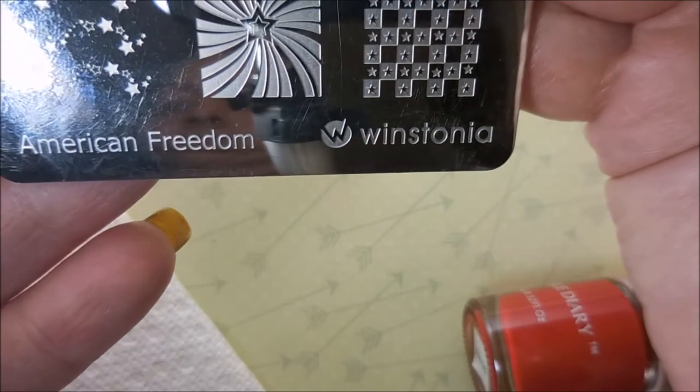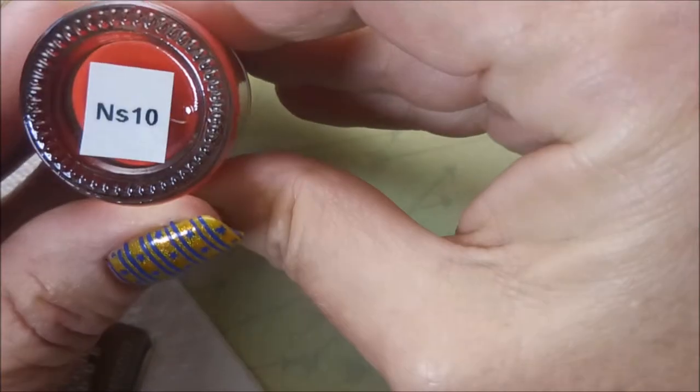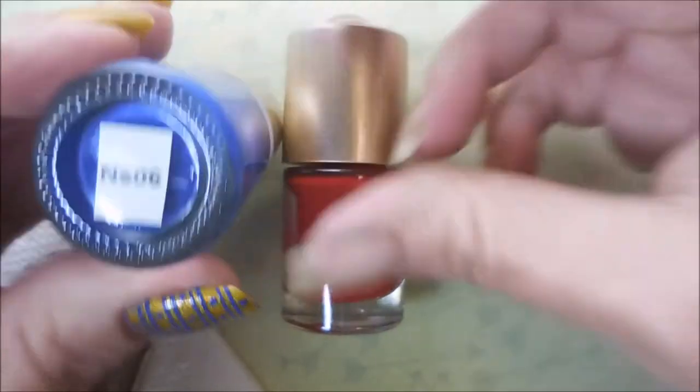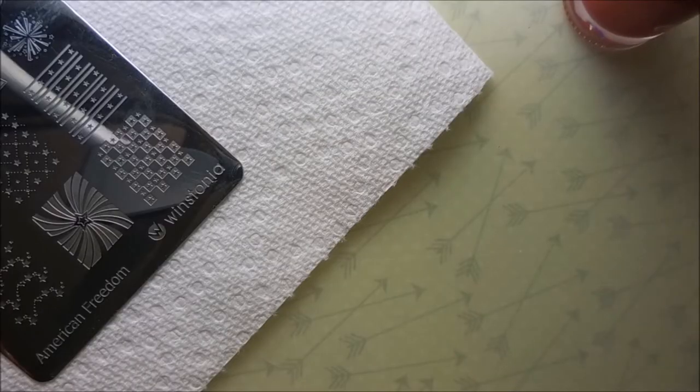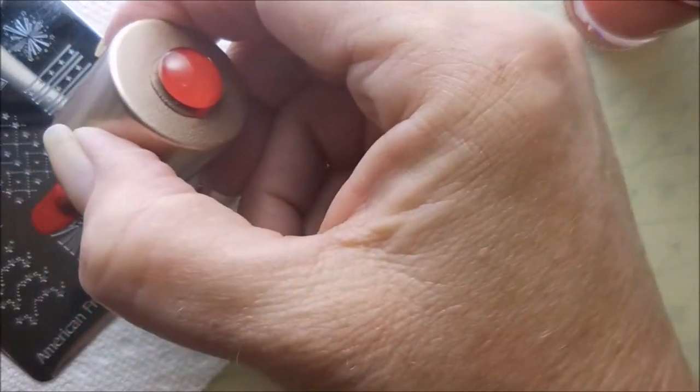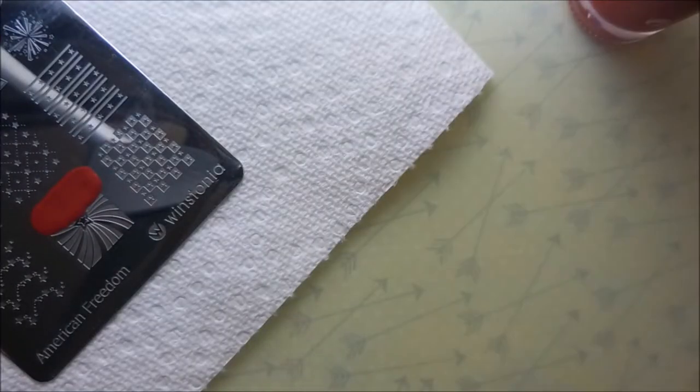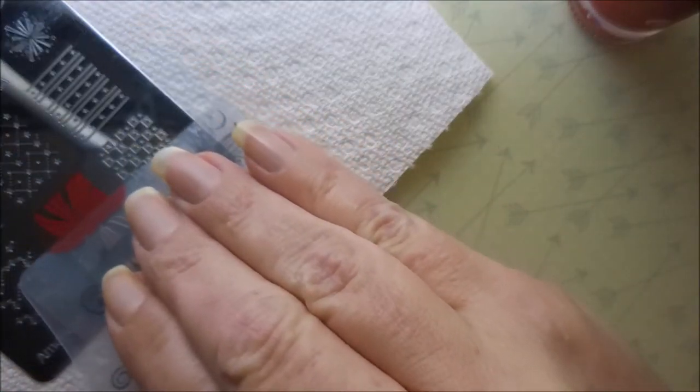And today I'll be stamping with the American Freedom plate from Westonia and the Nicole Diary Red, which is NS10 and the Nicole Diary Blue, which is NS06. And I'll be using my Clear Jelly Scraper and my Big Clear Stamper from Born Pretty. And I'm just going to use five different images off of this one plate.